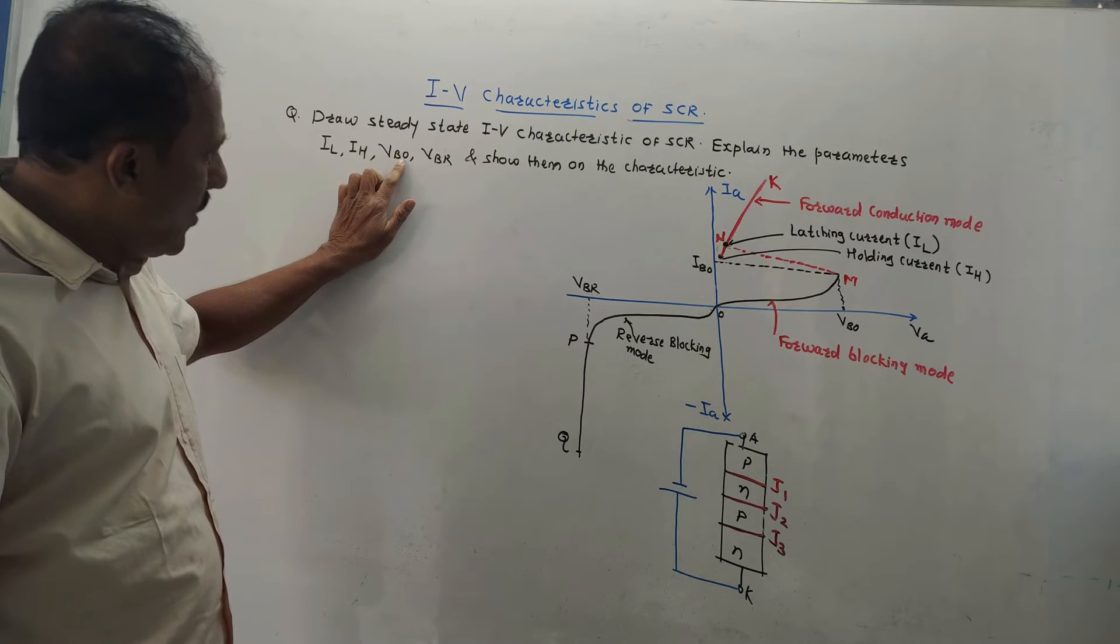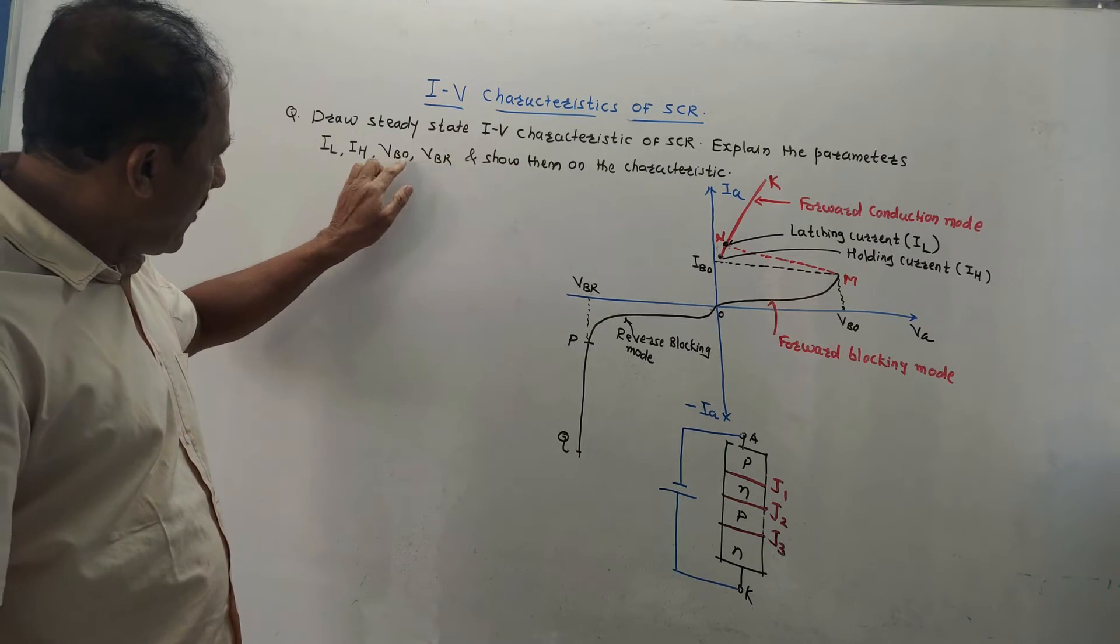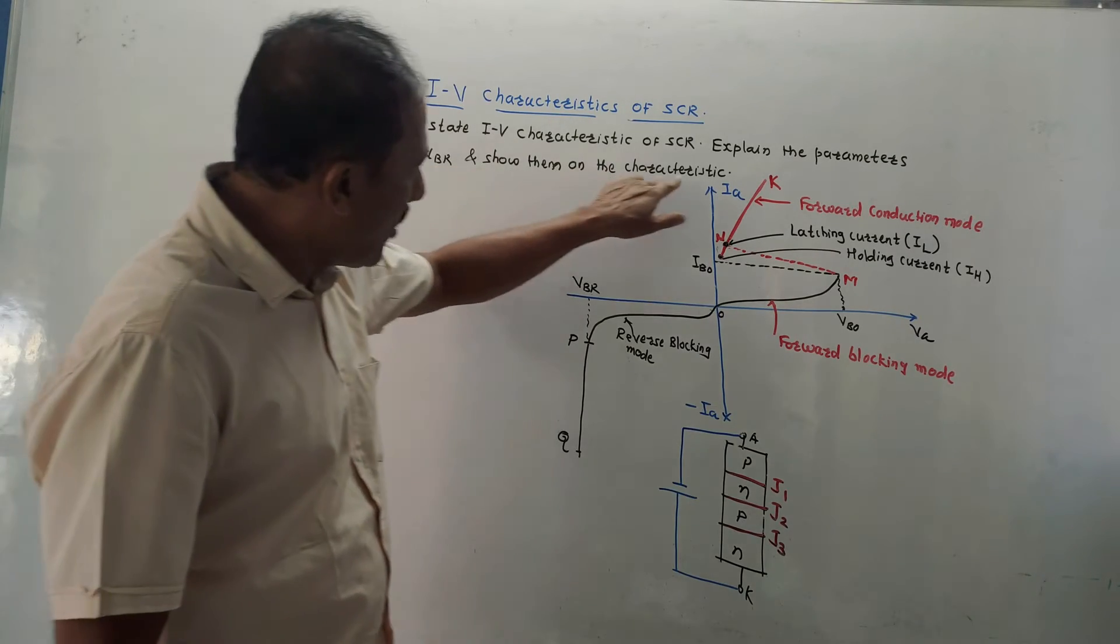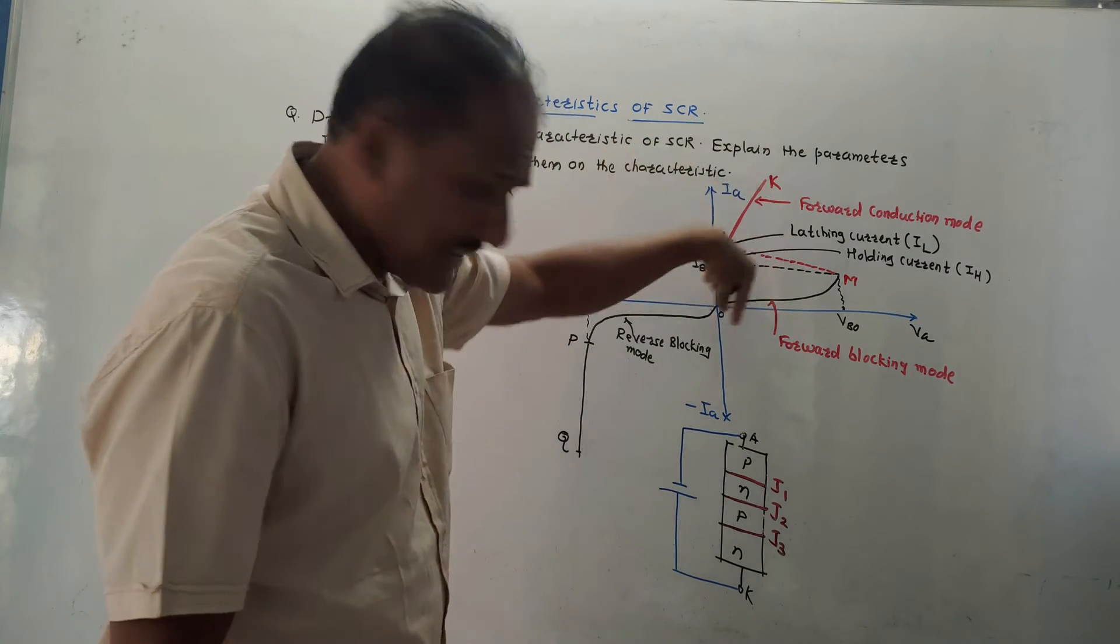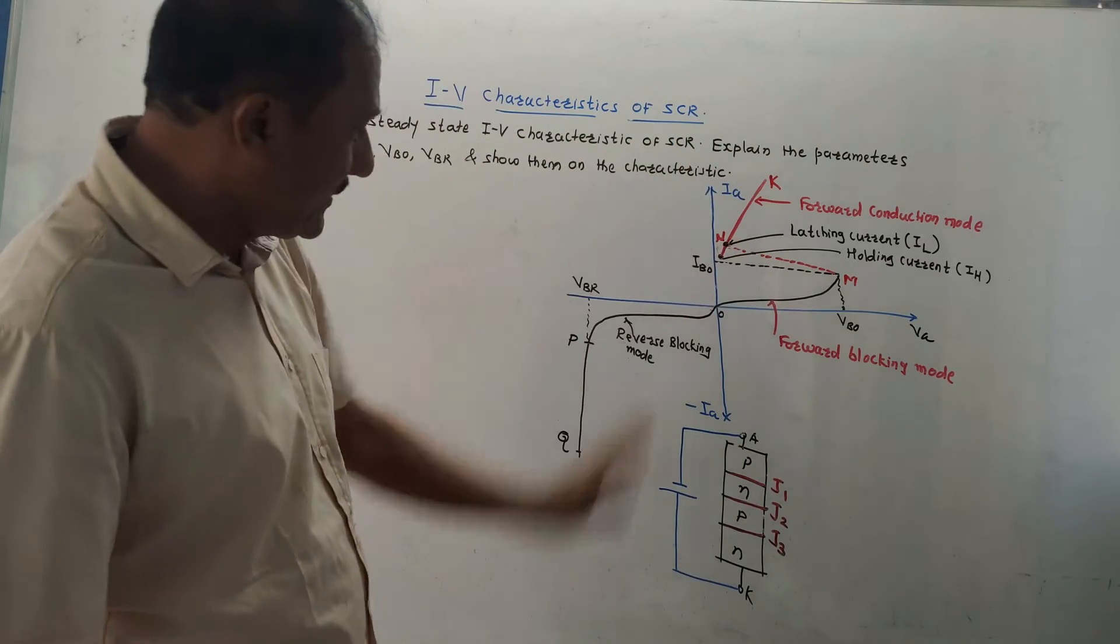Then VBO, that is offset breakdown voltage, then VBR, breakdown voltage, and show them on the characteristics. This is the characteristics. I will explain what information you need to write from the exam point of view.